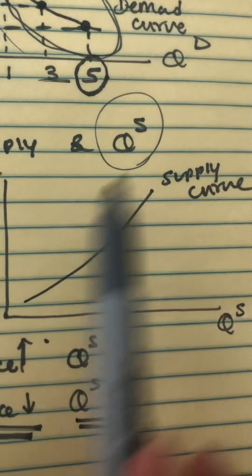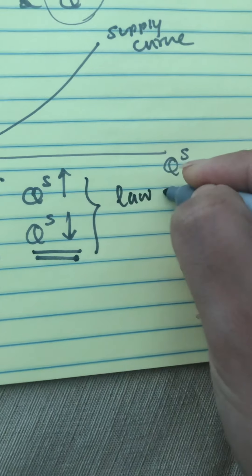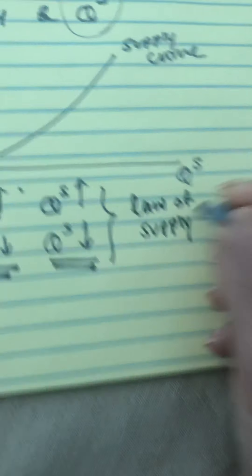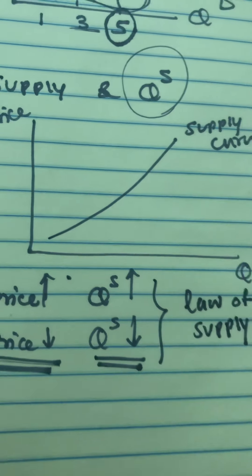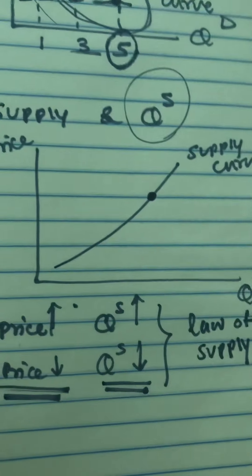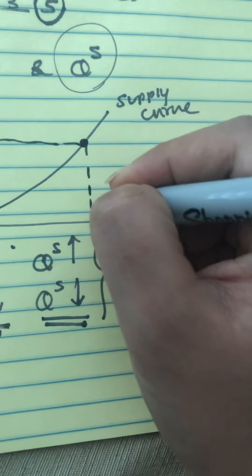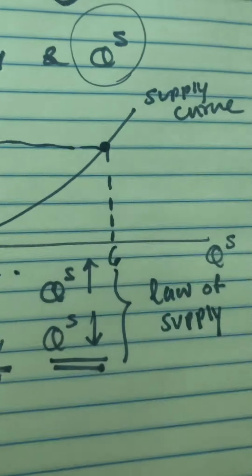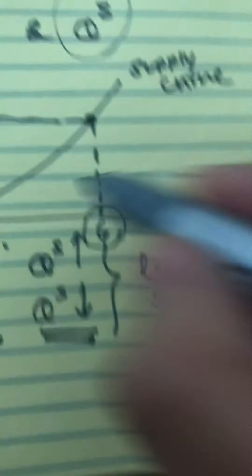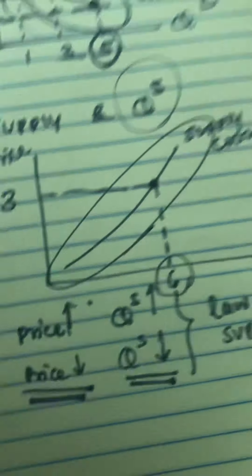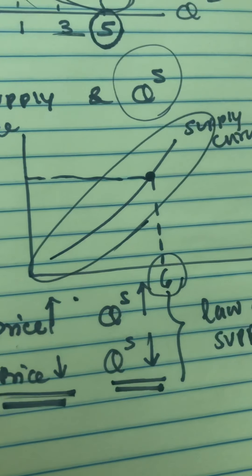That's why we have a positive relationship between price and quantity supplied, giving us an upward-sloping supply curve — this is the law of supply. Just like demand, quantity supplied is just one single point on the supply curve. So if the price of apples is $3, as a seller you might sell six pounds — that six is your quantity supplied. But if you have different prices with different quantities supplied, the entire thing is your supply curve.